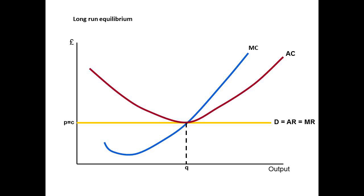Diagrammatically, that means drawing our demand curve horizontally, going through the bottom point of AC, meaning that when we produce where MC equals MR, we're also producing where AC equals AR, and therefore normal profit is being made.